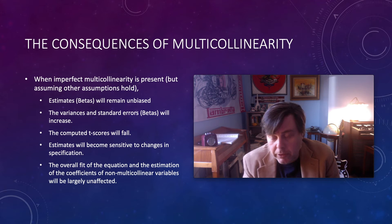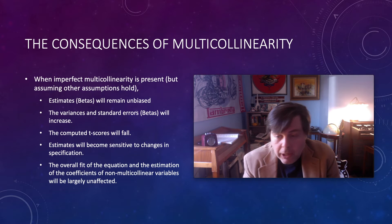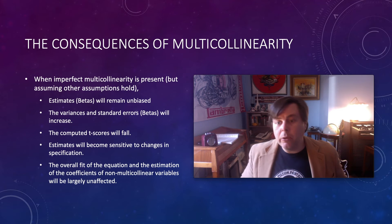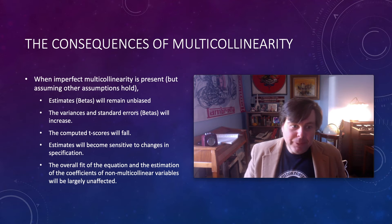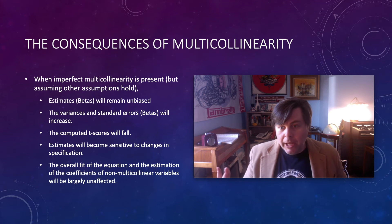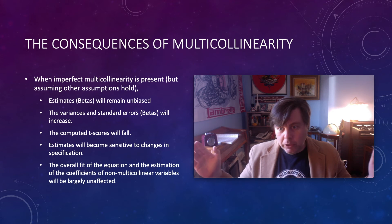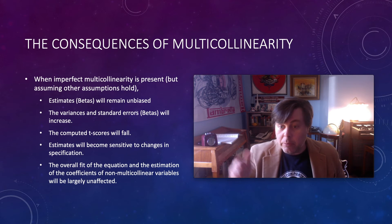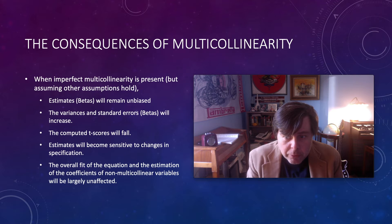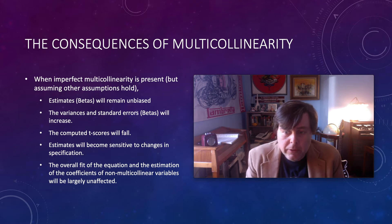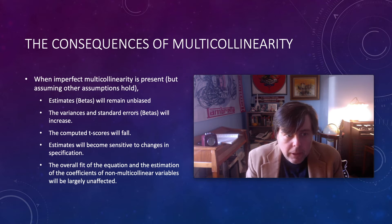What's occurring mathematically in our estimated regression equation when we have some degree of multicollinearity? Our estimated betas remain unbiased — the presence of multicollinearity alone does not bias our estimators. But what happens is you become more unsure about each one of them. That uncertainty shows up in the variance and standard errors associated with each of those betas — we become less sure about how each independent variable is determining variations in our dependent variable. Consequently, the computed t-scores will fall.